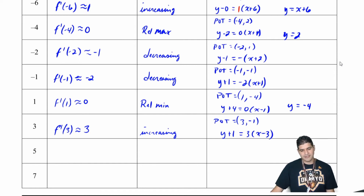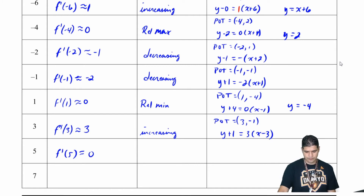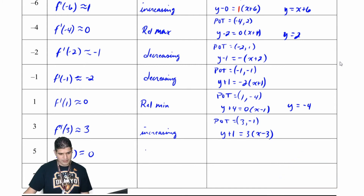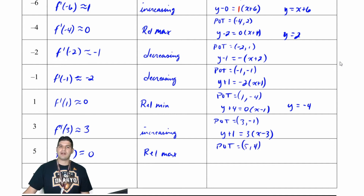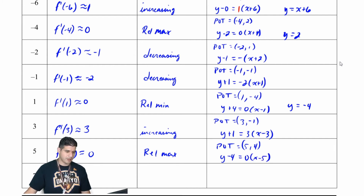At x equals 5, f prime of 5 is approximately 0 and we have a relative maximum. My point of tangency is 5 comma 4, so the equation is y minus 4 equals 0 times x minus 5, which simplifies to y equals 4.